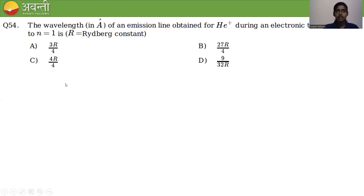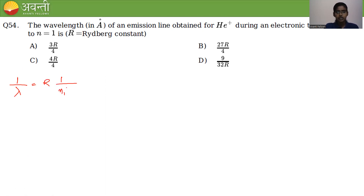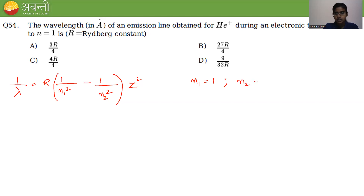We know that 1/λ = R × (1/n₁² − 1/n₂²) × Z², where n₁ = 1 and n₂ = 3 for our question — ground state and excited state.